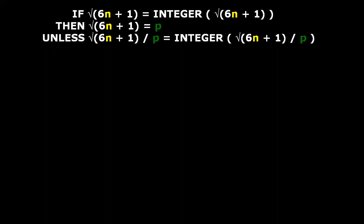With this formula we can find any prime number. It goes as follows: if the square root of six times N, the integer, plus one equals a whole number — that is, if the square root is fractionless — then we have found a prime number P, unless it is divisible by a prime number. That's what this formula says.